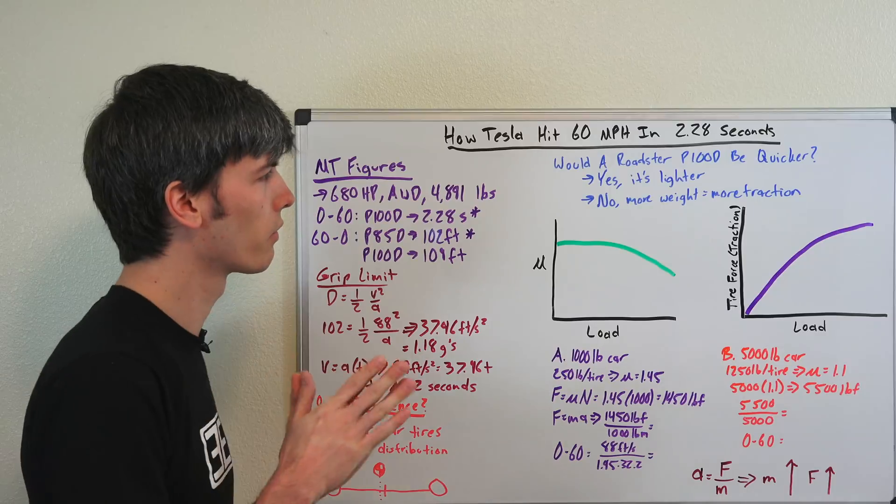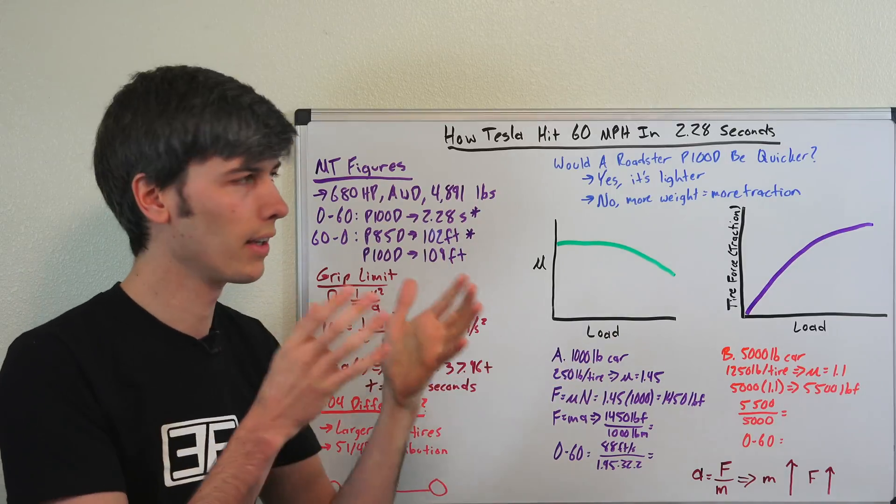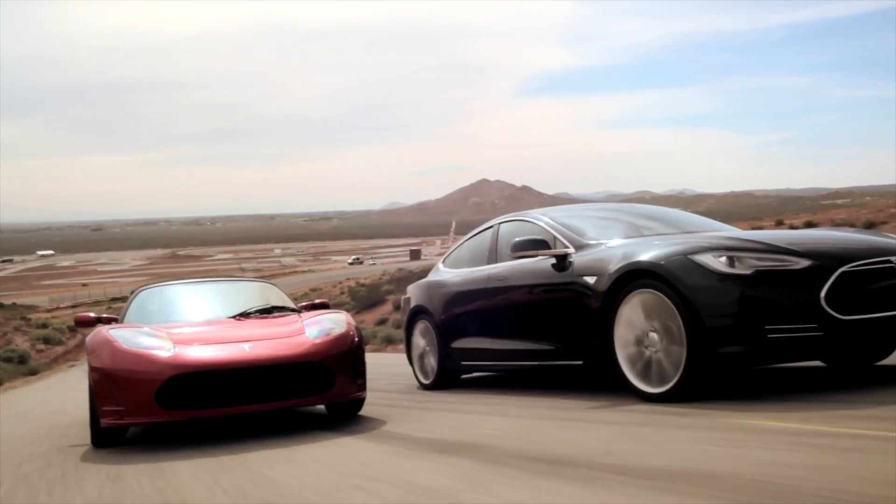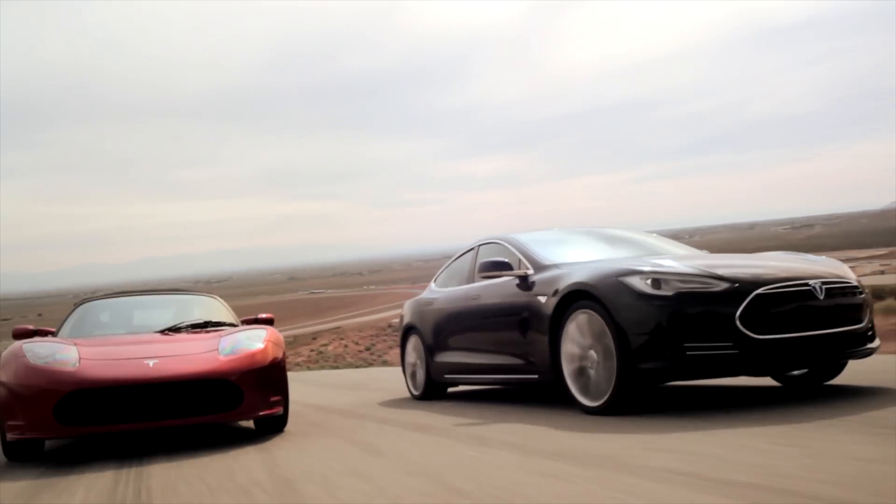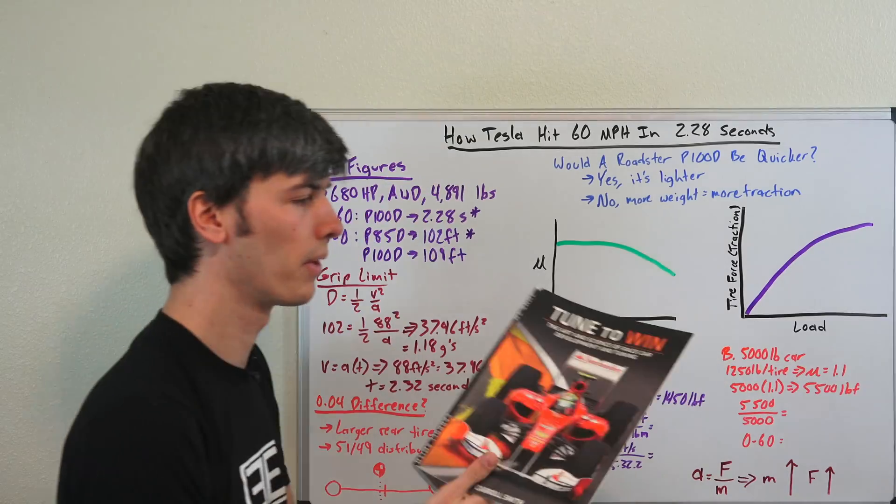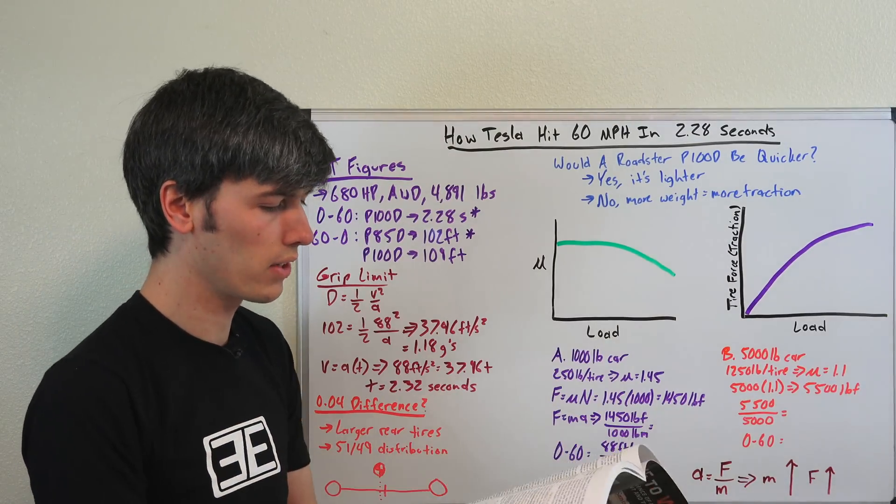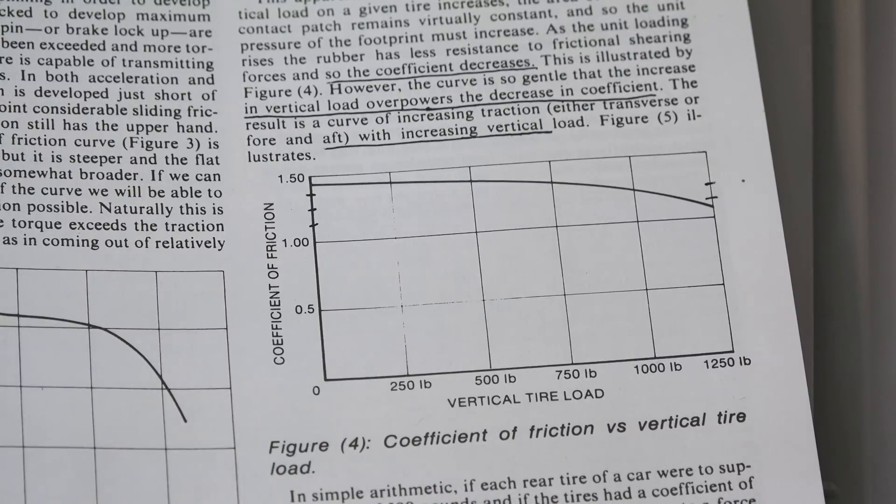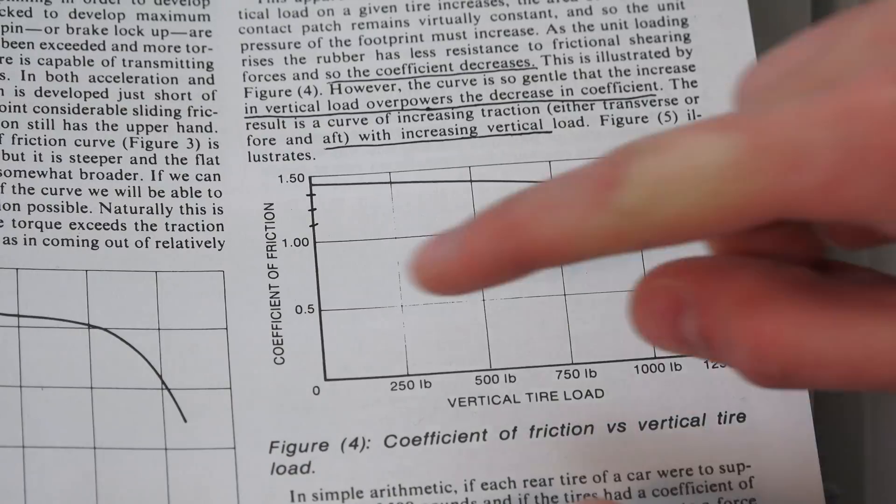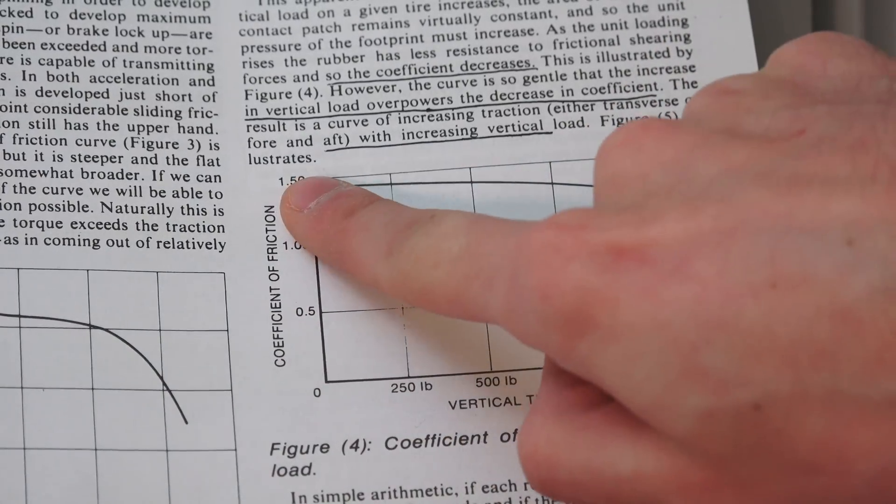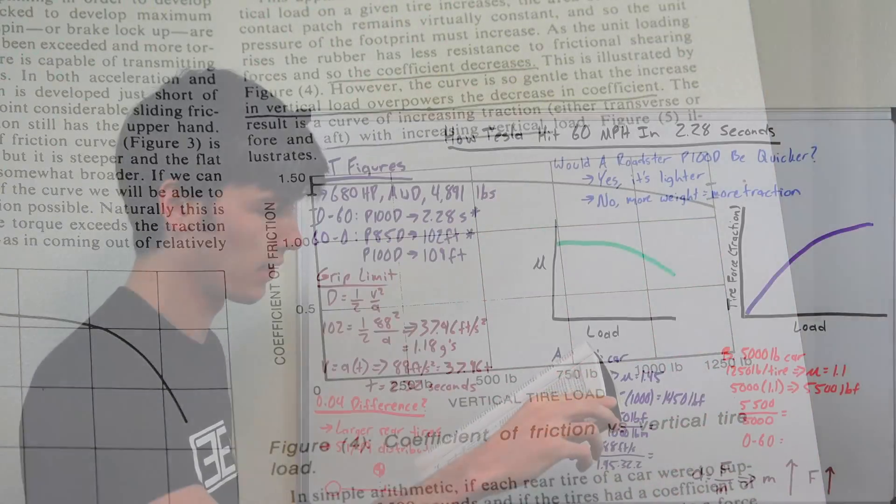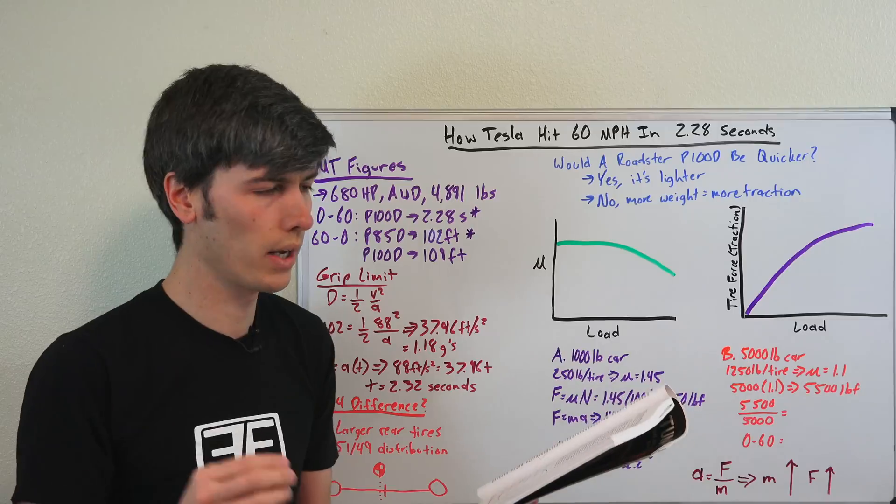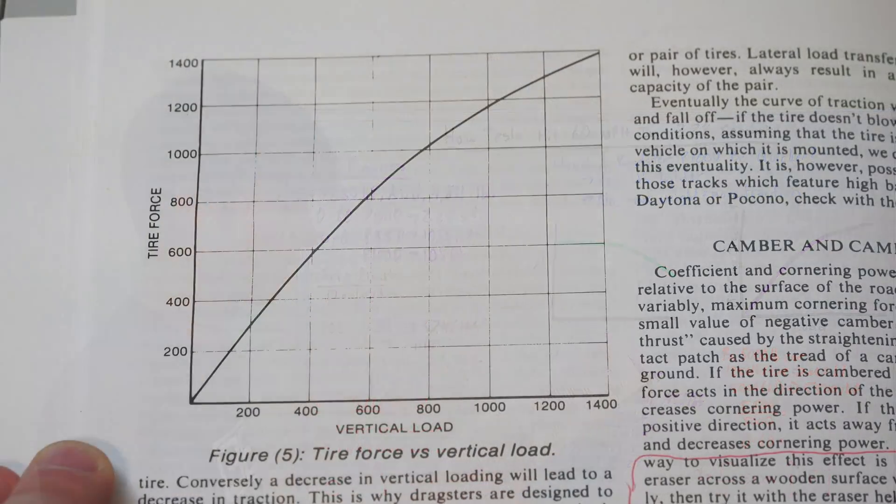And there were two kind of conflicting arguments here. Some people would say yes, it's lighter therefore it would be quicker. And then other people would say no, because the Model S has more weight it has more traction. And so I think a lot of that confusion comes from this book, Carol Smith's Tune to Win, which is actually a fantastic book. And within it there are two graphs which are actually pretty helpful to look at. The first one, coefficient of friction versus vertical tire load. And you can see that as the tire load on a vehicle increases the coefficient of friction of that tire with the ground decreases.